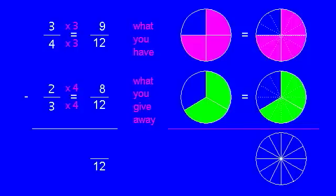So nine pieces give away eight. We have one piece left. So these are the nine pieces we start with, give away eight, and that's what's left.